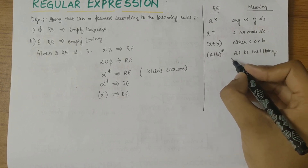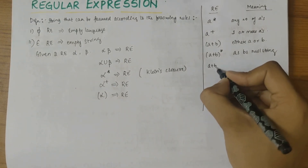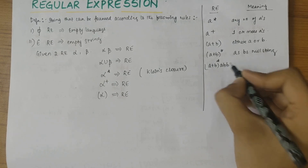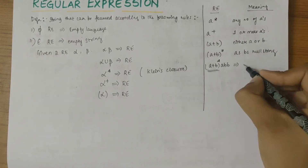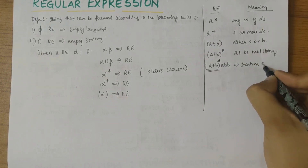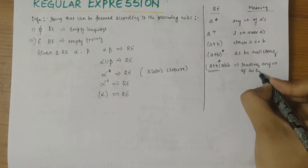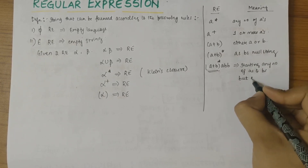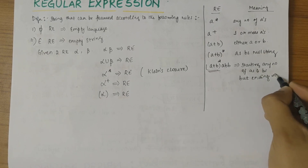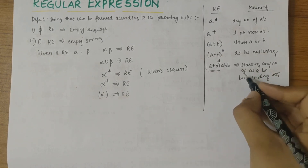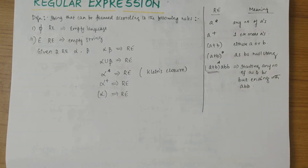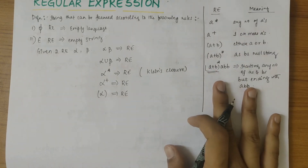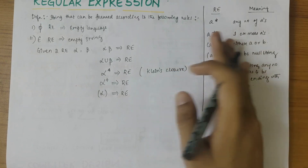Then we have (a+b)-star followed by a-b-b. This tells us that the string consists of any number of a's and b's at the start, but the ending has to be with a-b-b. These are the basic regular expressions we would come across, along with their meanings.